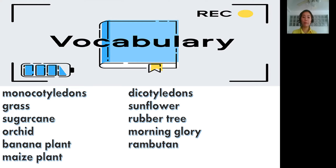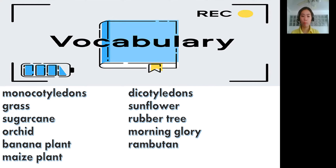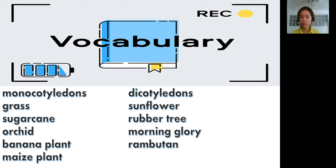This time I want you to repeat after me, and later we will spell the words. Please say: monocotyledons — monocotyledons. One more time: monocotyledons. Grass. Sugarcane — one more time. Next: orchid.